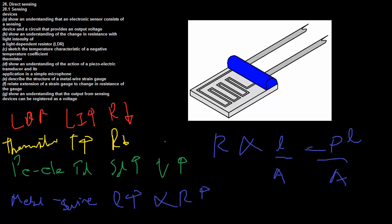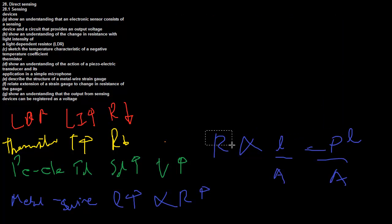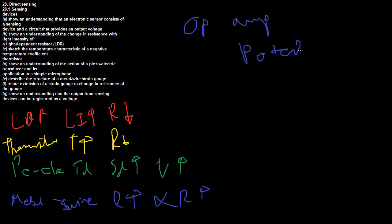So it's all good and well saying that these components can change the resistance within a circuit depending on the physical environment. But now how do we change these changes in resistance into something we can tangibly compute? Well, this is where there's two ways principally that you need to know. One's called the op-amp which we'll cover in the next video. And the other one's called the potential divider which you're hopefully already familiar with. And I'm going to go over it briefly now.